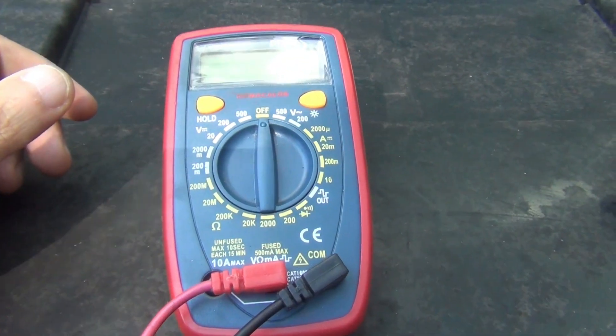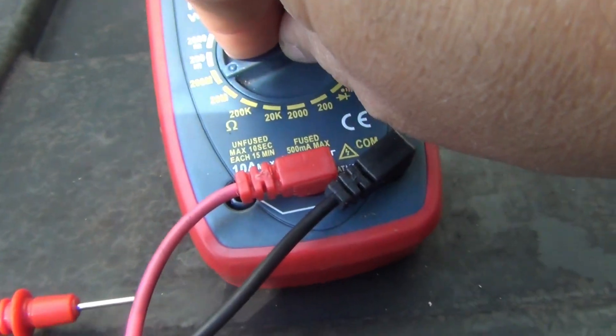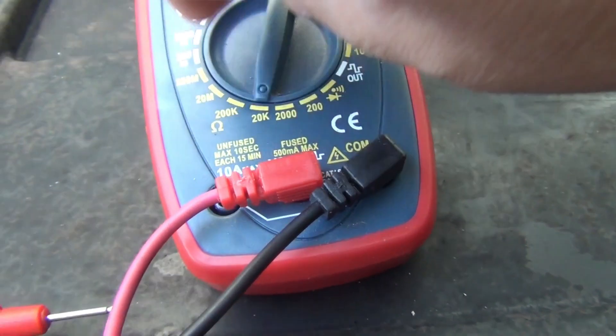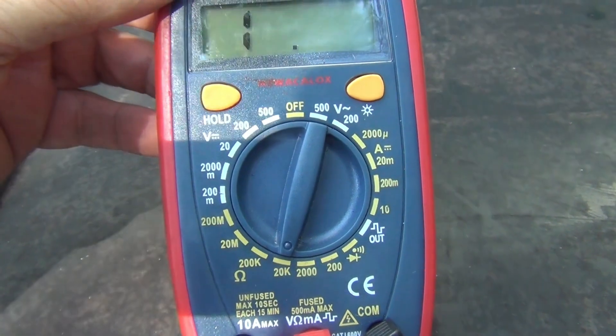All you do is turn on your multimeter and set it to 20k. There you go. That shows resistance.